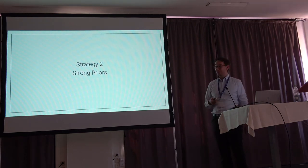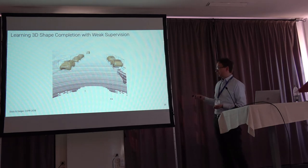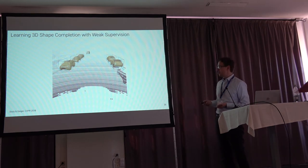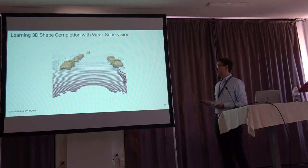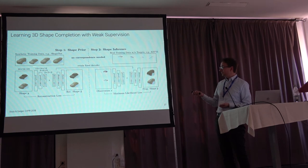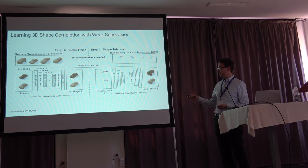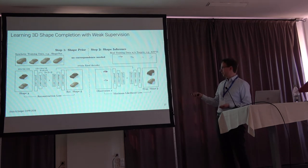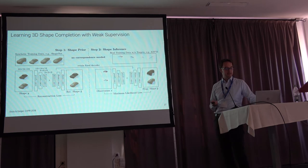Strategy two. We already talked about hard constraints; now soft constraints. As an example: if we want to detect vehicles from LIDAR point clouds and also infer their 3D shape, the problem is that there's no good ground truth because the laser scan is also sparse. So we take a CAD model database — for instance from ShapeNet — and train an autoencoder using a standard reconstruction loss, which encodes our shape prior in the latent space and decoder. We then plug this decoder into an encoder-decoder architecture trained with a maximum likelihood loss to predict completed shapes from observations — basically amortized inference using the shape prior as additional information.